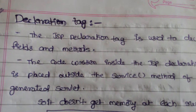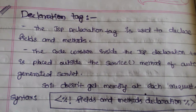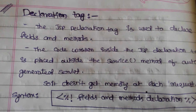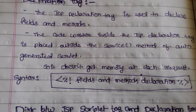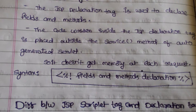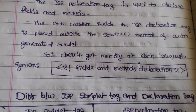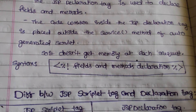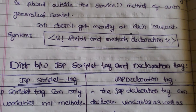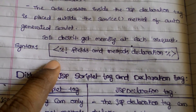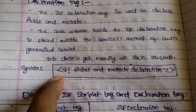The JSP declaration tag is used to declare fields and methods. The code written inside the declaration tag is placed outside the service method of the auto-generated servlet, so it does not get memory allocated at each request.